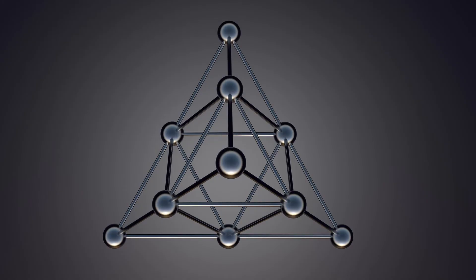Atoms link together to form the physical object they are making. Crystals have a specific way the atoms are linked together. In crystals, the atoms link together in a way that repeats over and over again. This repeating makes a pattern.